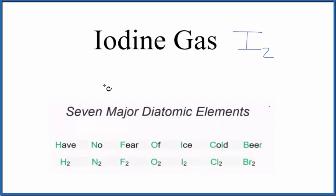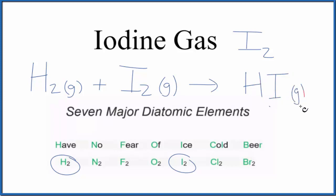So think of it this way. If we had hydrogen gas, which is actually another diatomic, H2 gas, plus iodine gas, that's one of our diatomics here, iodine gas, we'll end up with hydrogen iodide, and that is a gas as well.